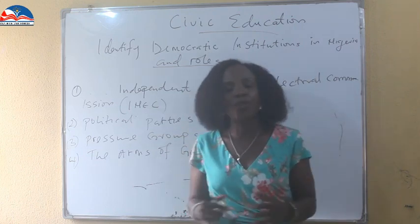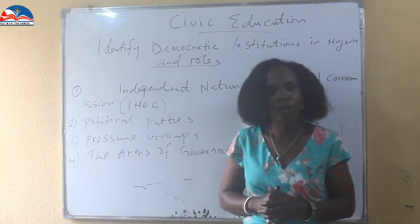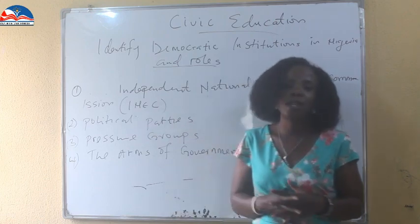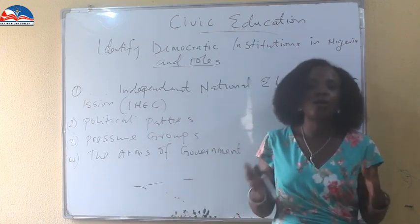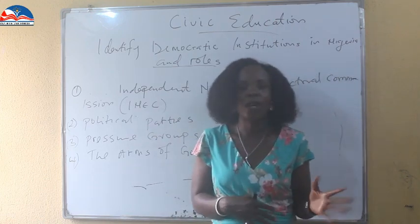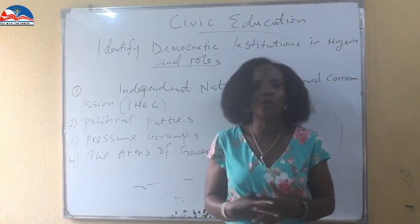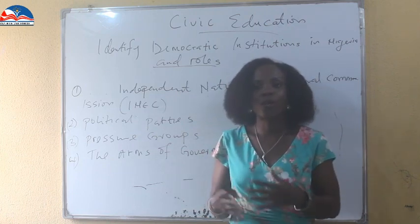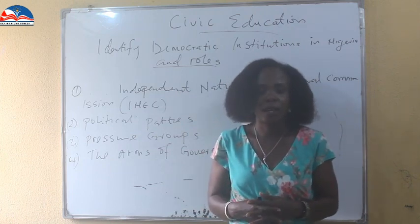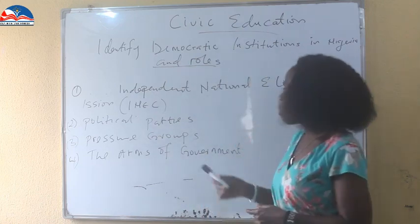So that's the role of the Electoral Commission. It is a commission in Nigeria that oversees the electoral system of the country — they register political parties, provide electoral materials, provide security, and collect results to declare winners. Now we go to the second point: political parties.